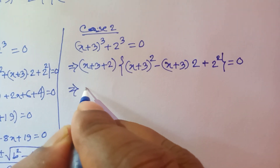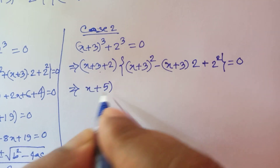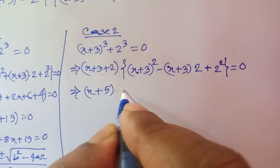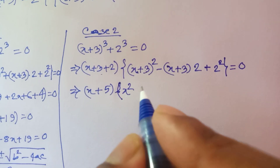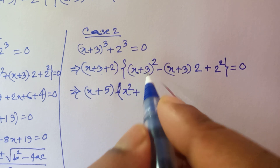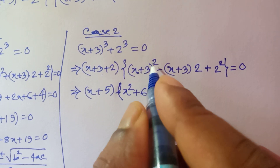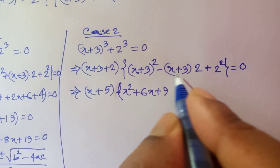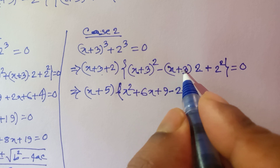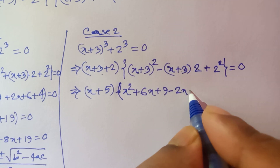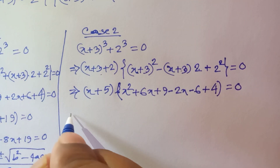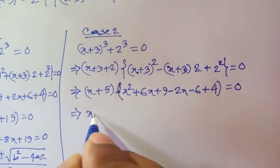So x plus 3 plus 2 gives x plus 5. Expanding using the a plus b whole squared formula: x squared plus 6x plus 9, minus 2x, minus 6, plus 4, equals 0.